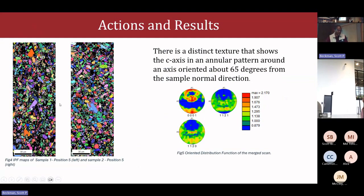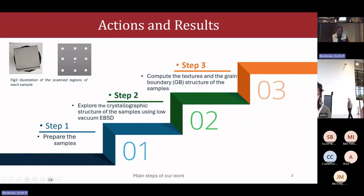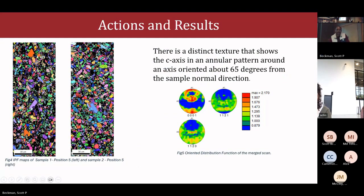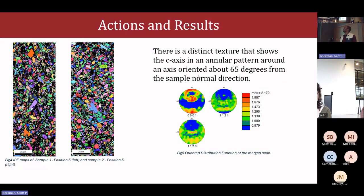Here are examples of what we got from the EBSD analysis. We have these two maps — just examples of the maps we got right in the middle for each sample. The dark areas are low confidence indexed and we excluded them. From these samples, we found a distinct texture that shows an annular pattern around an axis oriented about 65 degrees from the sample normal direction.